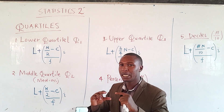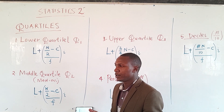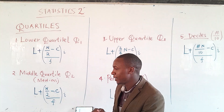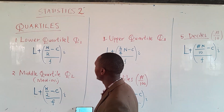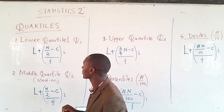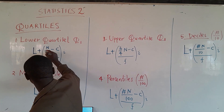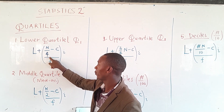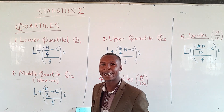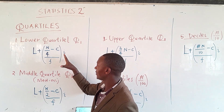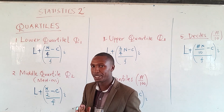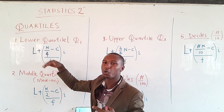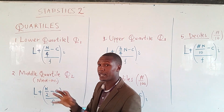If you think of the median, the median has a formula in which we find the middle of a given data. We can also find the lower quartile, or Q1. The lower quartile is obtained using this formula: L plus (n/4 minus c) divided by f, multiplied by i. All the other values — L, f, c, and i — remain the same.